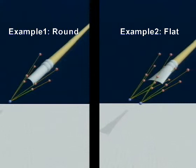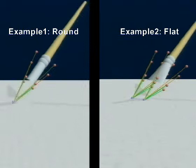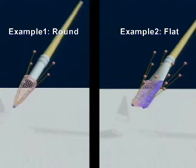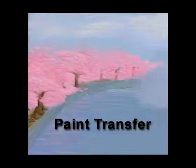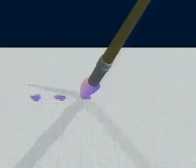Each brush is driven by a spring-mass skeleton. The deformation of the spring-mass skeleton is physically simulated, and subdivision surface control points are positioned relative to the skeleton. The subdivision surface deforms based on the skeleton. A portion of the subdivision surface is allowed to penetrate the canvas, and this is rendered to the two-dimensional footprint texture used by the bidirectional paint transfer procedure.